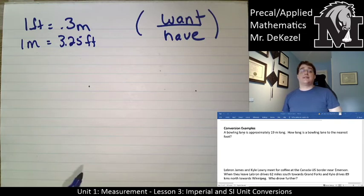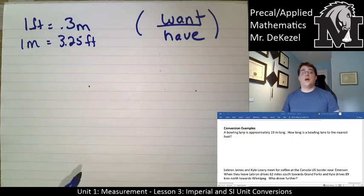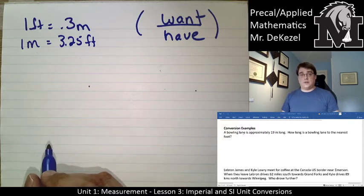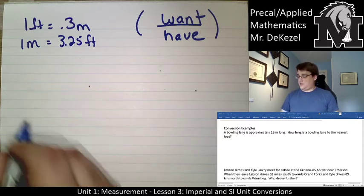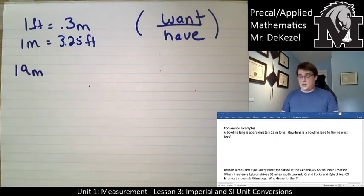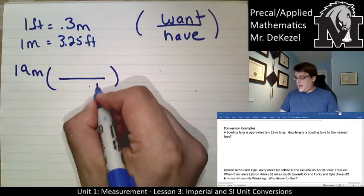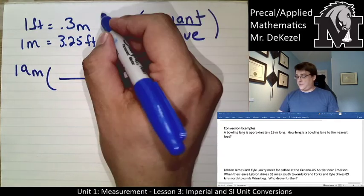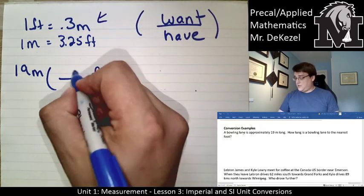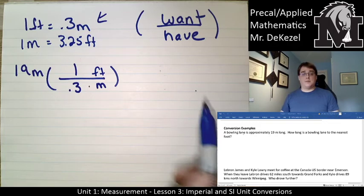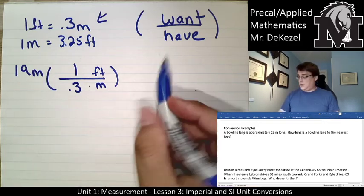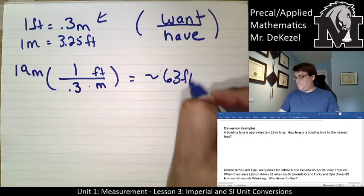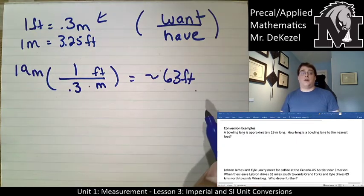Let's try both of them. We use our conversion: what we have goes on the bottom and what we want goes on the top. So we'll use feet on the top. Using the first one, one foot is 0.3 meters, so I'm taking 19 and dividing it by 0.3, which equals approximately 63 feet.